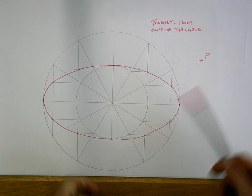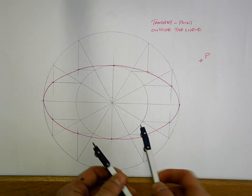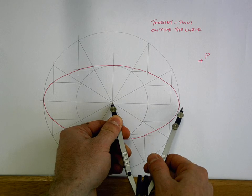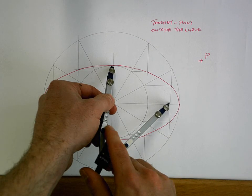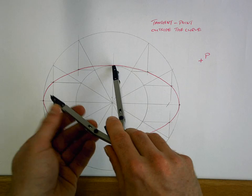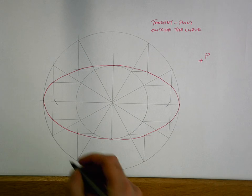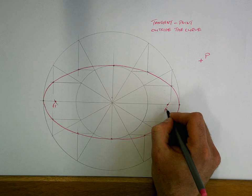Alright, tangent from a point outside the curve. The first thing you need is your focal points. So this is extra revision. To get your focal points, half your major and you strike it from the top of your minor axis. It's the same on both sides, so left and right hand side. So we label those as focal point one and two.